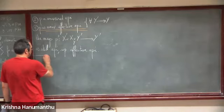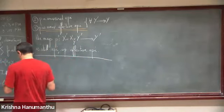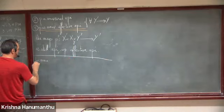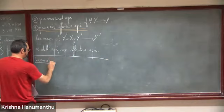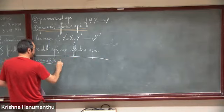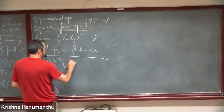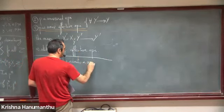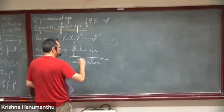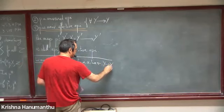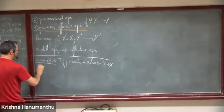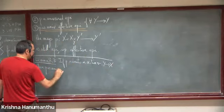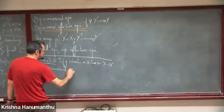Let me give an example. If P admits a section σ going in the other direction, then P is a universal effective epimorphism.